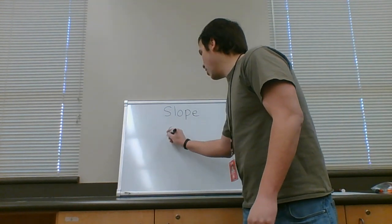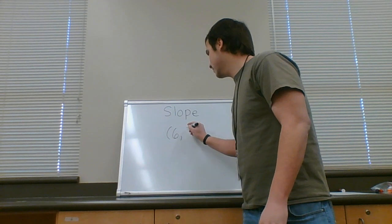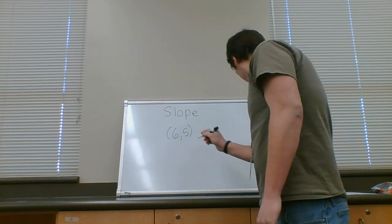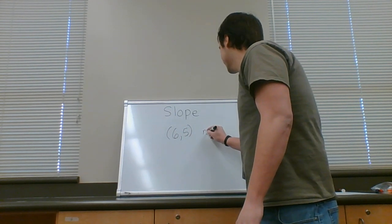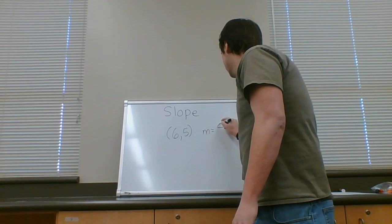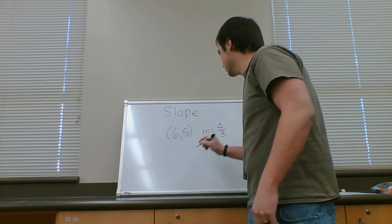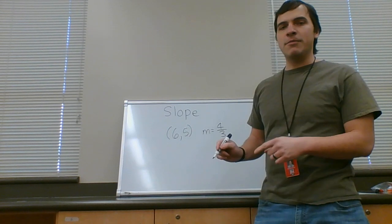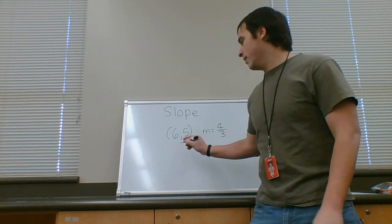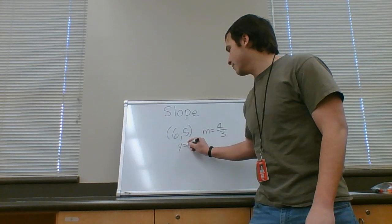So suppose you know a line goes to (6, 5) with a slope of four thirds. Okay, so remember slope intercept form is y equals mx plus b.